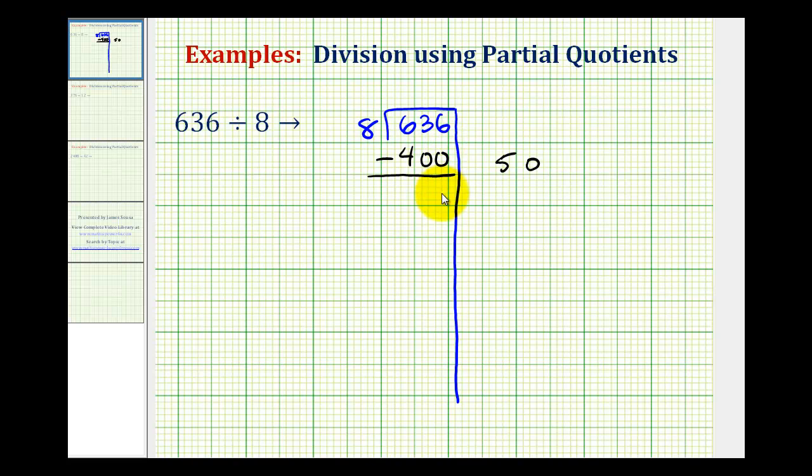Notice how this difference is 236, so now we're going to keep finding partial quotients until the difference is less than 8. Again we know that 8 times 10 would be 80, which would work, but since 50 times 8 is 400, 25 times 8 would be 200. So let's use a partial quotient of 25. Again 25 times 8 is equal to 200.